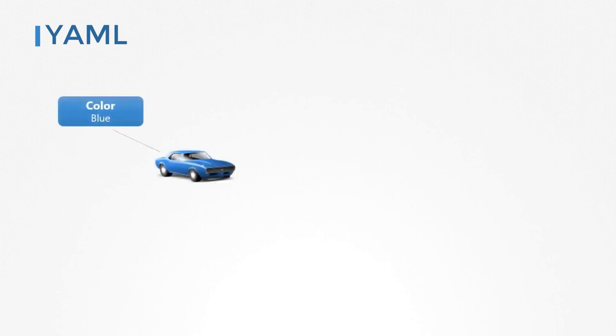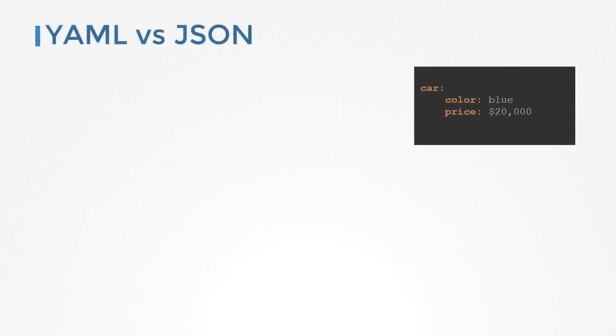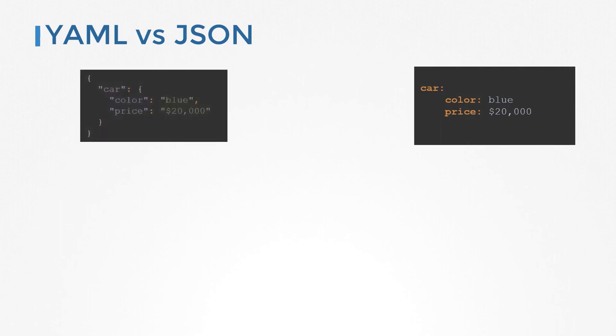In one of the earlier videos, we got introduced to the basics of YAML. We saw how YAML was used to represent data in a structured format — you gather information about an object, in this case a car, convert it into data and store it in YAML format, which is easily read by humans and easily parsed by machines or programs. So what's the difference between YAML and JSON? Well, they're one and the same thing. You can represent the same data in almost the same way in either format.